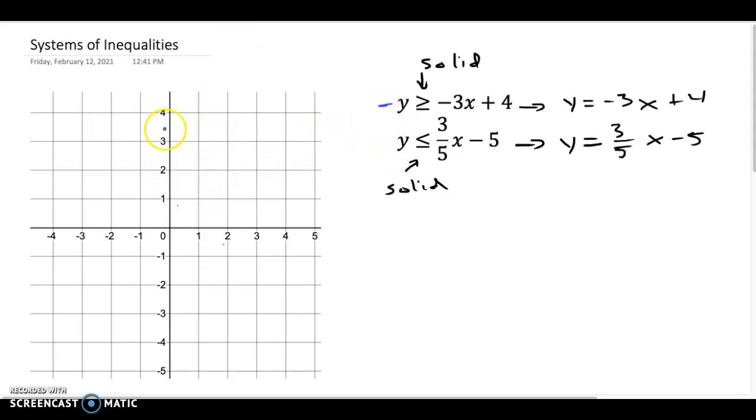And so I start at positive 4 and negative 3, down 3 to the right 1, down 3 to the right 1, down 3 to the right 1. So there's my first one. It's a solid line. So I'm going to go ahead and try to draw this out here without messing it up too bad. Oh, this is rough. Here we go.